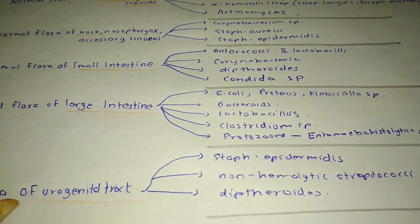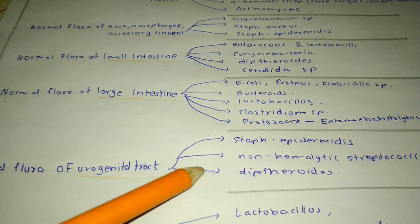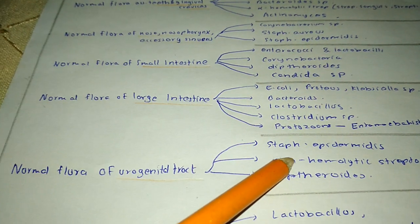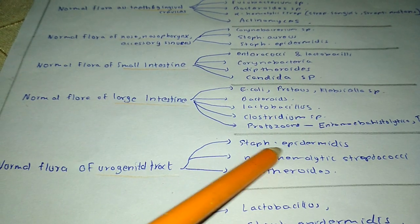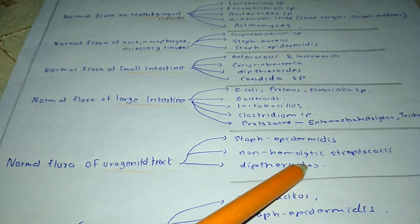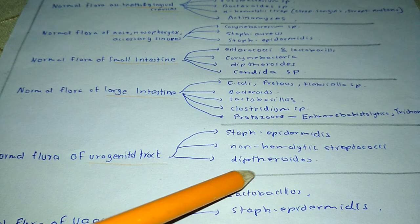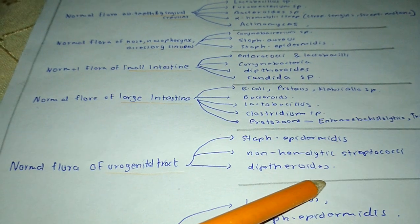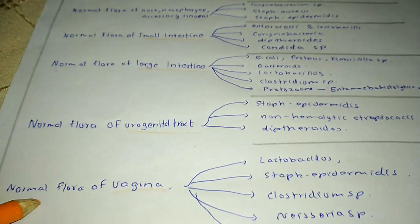The normal flora of the urogenital tract mainly includes Staphylococcus epidermidis, non-hemolytic Streptococcus, and diphtherioids.